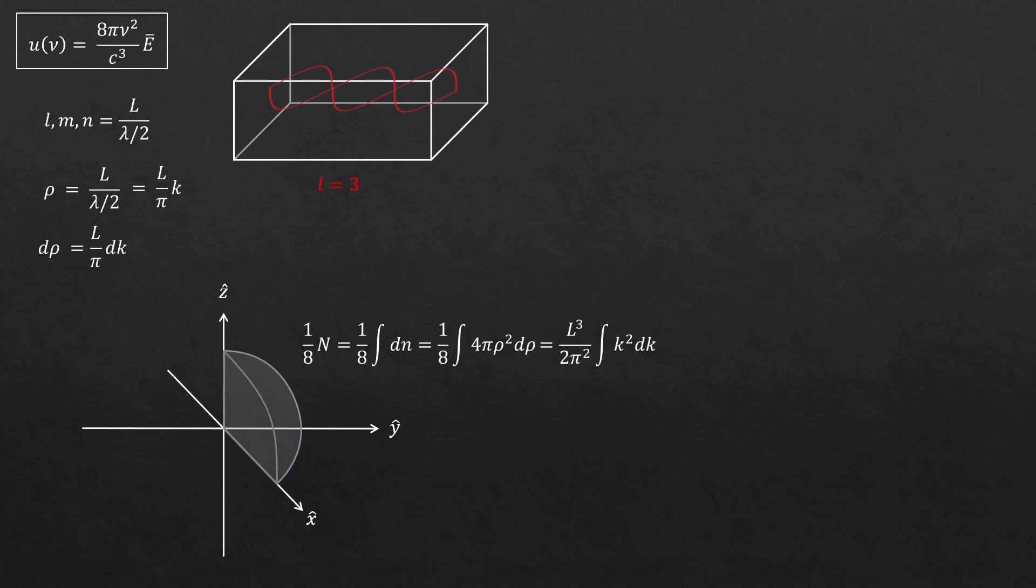So this integral is going to become like this. L cube is the volume of the box, so V. And now radiation is formed by electric and magnetic fields like this, right? And we must distinguish these two different cases. They aren't the same. So just multiply by 2.